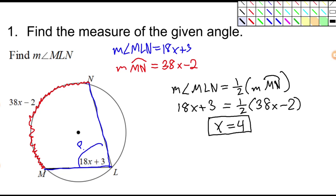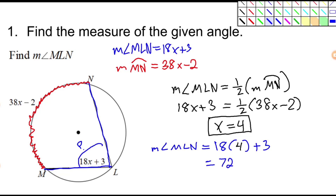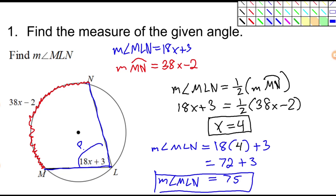Now I know what X is, I can find that angle. The measure of angle MLN is equal to 18 times 4 plus 3. Let's do some mental math: 18 times 4 is 72, plus 3 more, which is equal to 75 degrees. So in this problem, the angle we were looking for is 75 degrees. And the arc has to be 150 degrees — you can check by plugging in 4 for X.